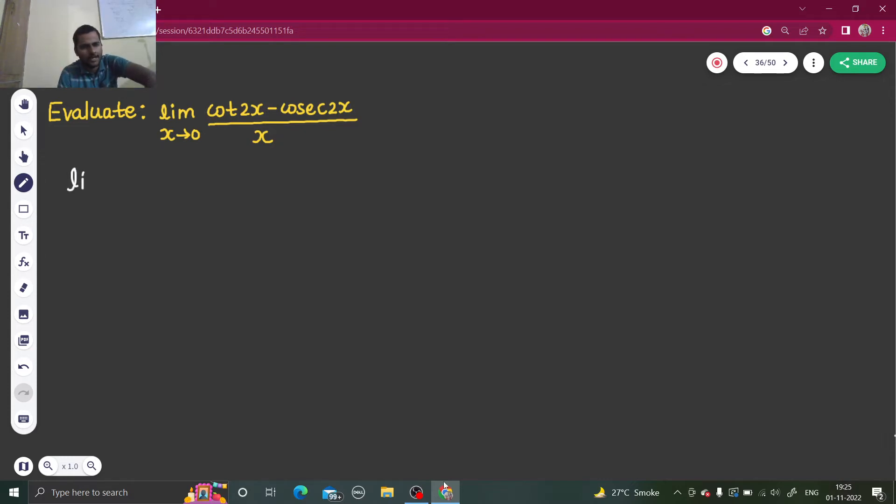So I can write this as limit x tending to 0: cos 2x divided by sine 2x minus 1 upon sine 2x, divided by x.